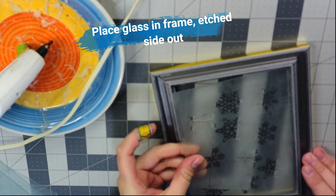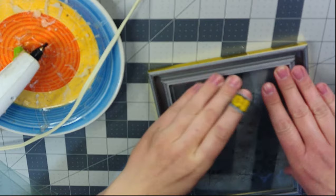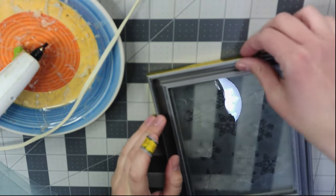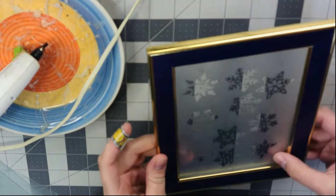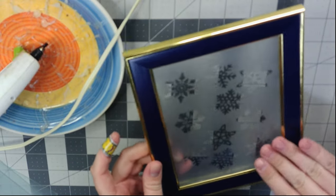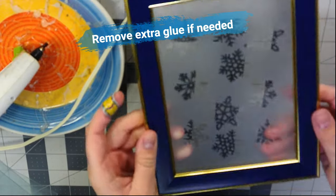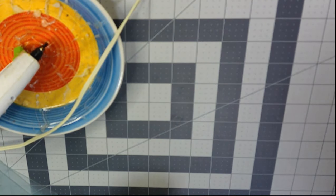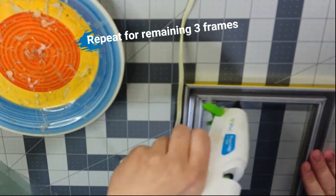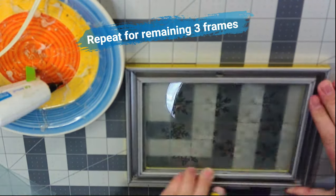Now we are going to take the glass and we want to make sure that the matte or etched side is facing towards the outside of the frame. The shiny part that we didn't etch should be facing you. If needed, then you can remove any extra glue. Now we are going to repeat those same steps for the remaining three frames.